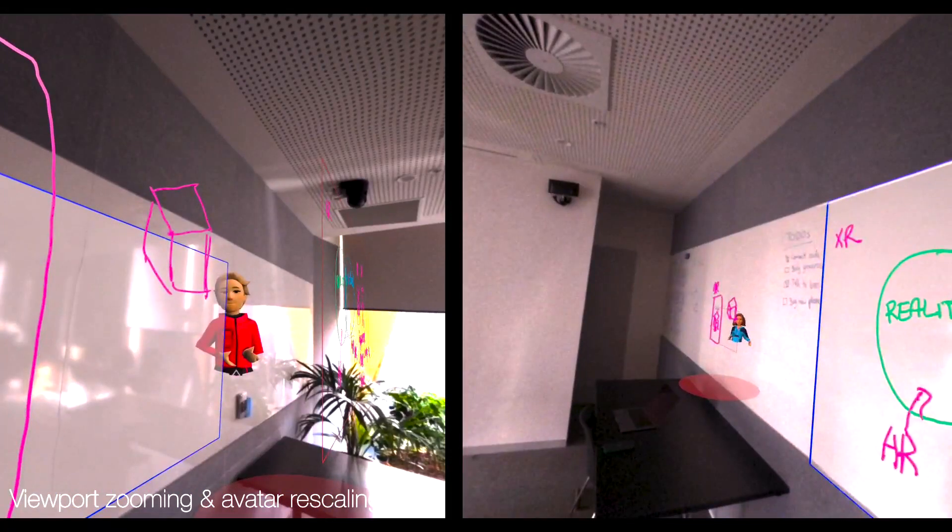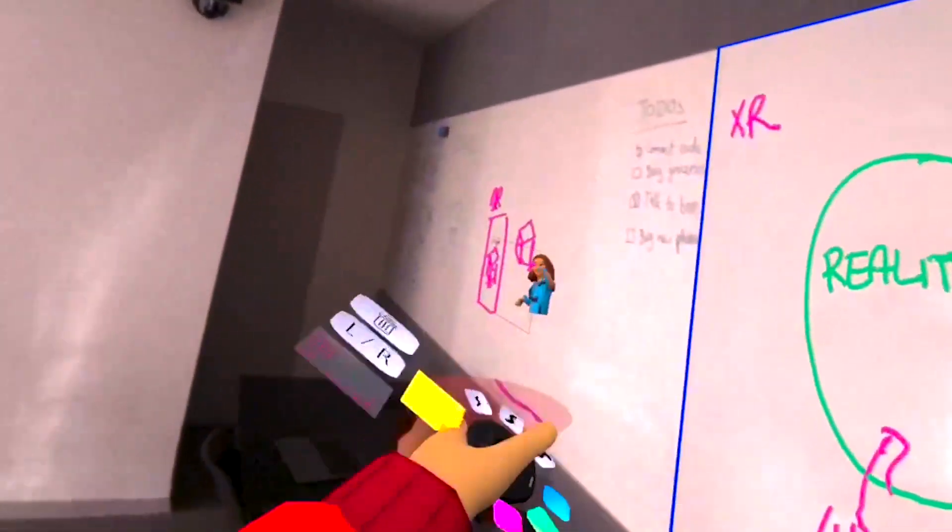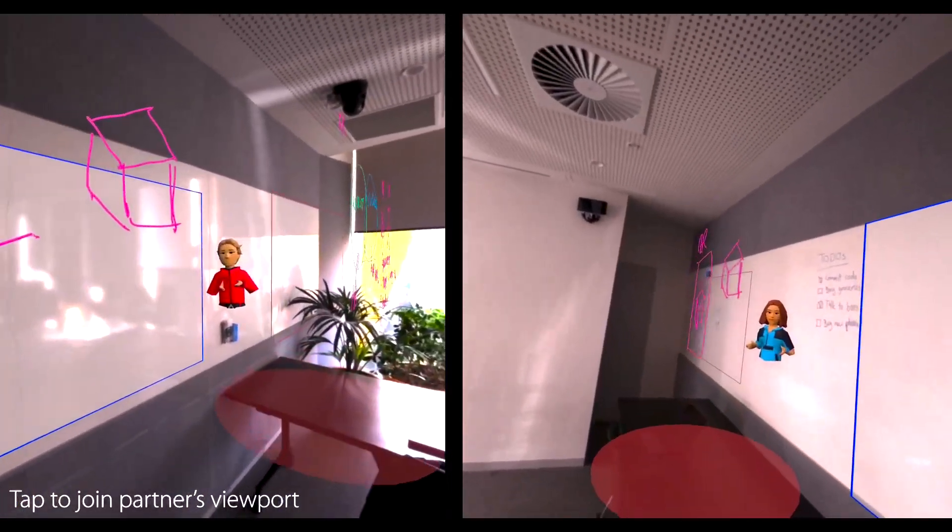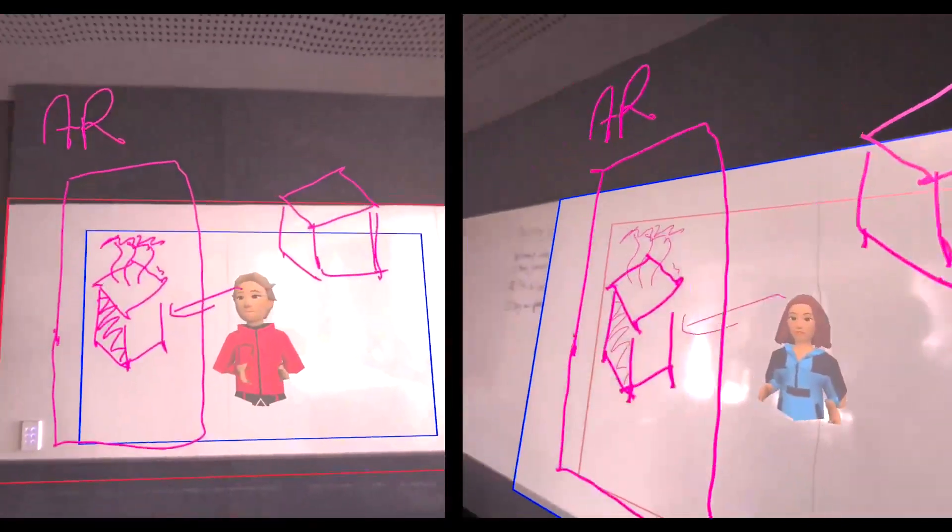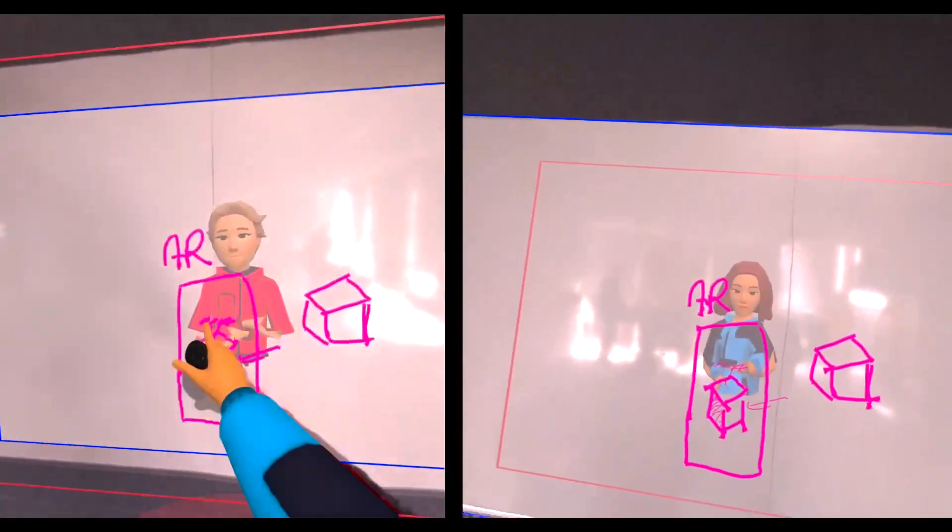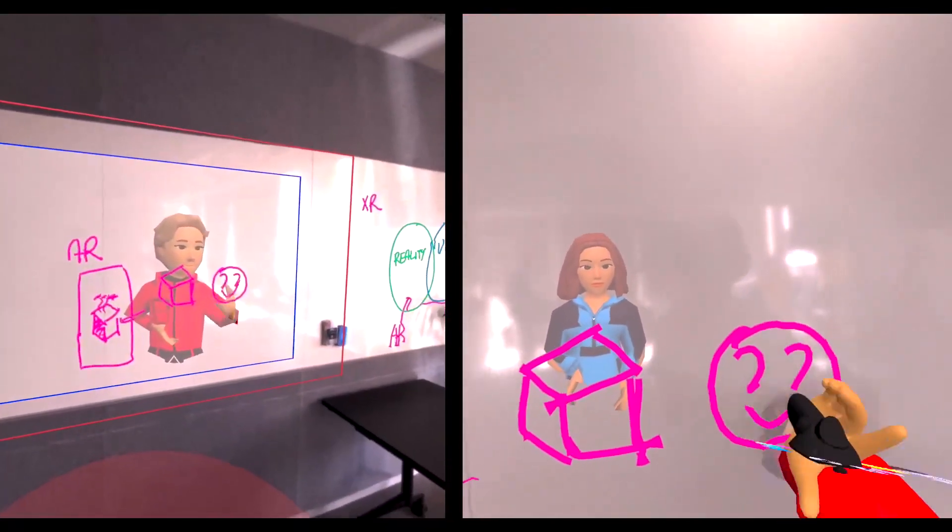These scale disparities can provide awareness cues, like showing Bob that Alice is working on a detail, but they also compromise the physicality needed for natural conversation. To resolve this tension, users can tap to join their partner's viewport. This interaction enables Alice and Bob to snap back to reality with physically aligned whiteboards and avatars at eye level.